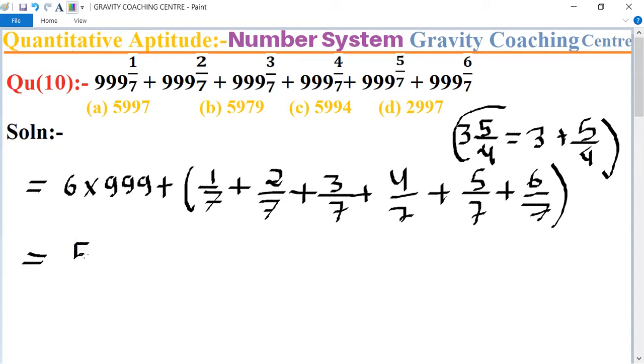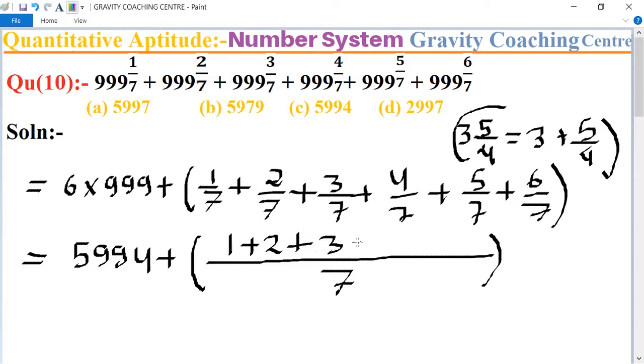Five double nine four plus the LCM of, so here LCM is seven, and so sum of one plus two plus three plus four.